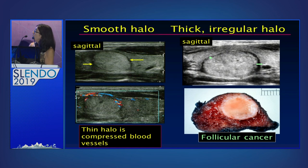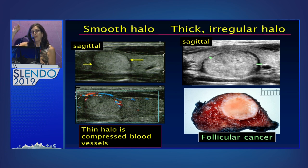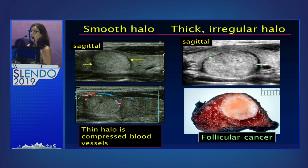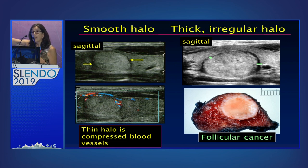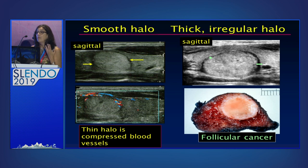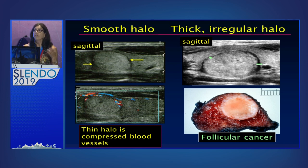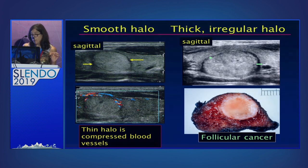Here is an example. The nodule is the same grayscale as the background thyroid, and what allows you to identify it as a nodule is that thin black line around it. If we look at it with color flow Doppler, which allows us to see blood vessels, you can see that this thin black line corresponds to compressed blood vessels. On the other hand, here's another nodule — again the same gray color as the background thyroid, so what makes it a nodule is that halo — but you can see this one is thinner and thicker in different places. This was actually an encapsulated follicular carcinoma. Same grayscale, but very subtle differences in that black line forming the border.